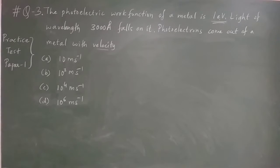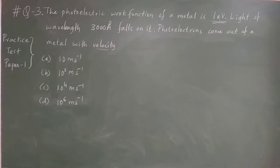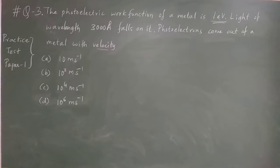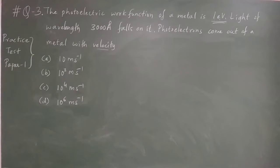Practice test paper 1, question number 3. The photoelectric work function of a metal is 1 electron volt. Light of wavelength 3000 angstrom falls on it. Photoelectrons come out of the metal with velocity — option A: 10 m/s, option B: 10³ m/s, option C: 10⁴ m/s, and option D: 10⁶ m/s.